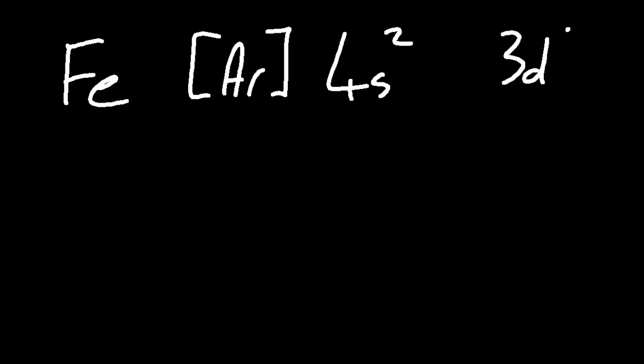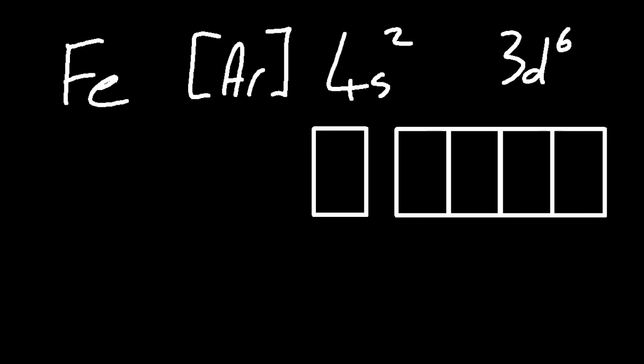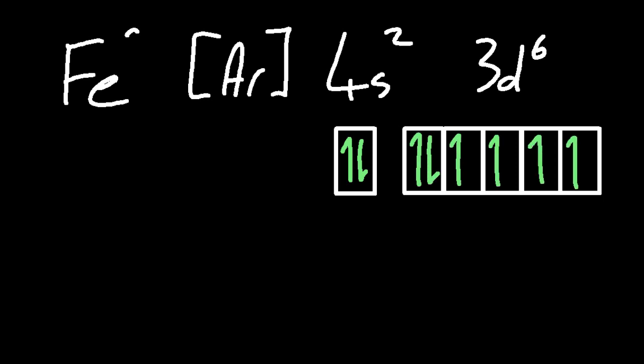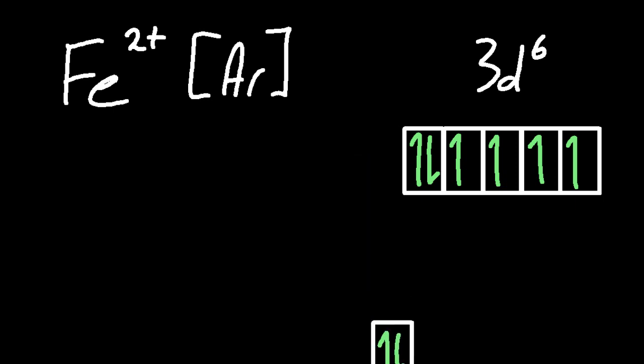Moving on to iron. That has two oxidation states, plus two and plus three. Let's look at those quickly. So for the plus two ion, again, losing the valence shell, the outer shell, the fourth energy level, 4s. And losing one more electron gives me iron 3 plus.